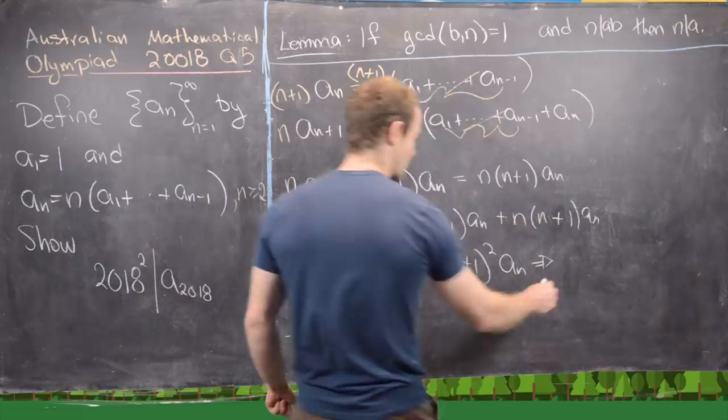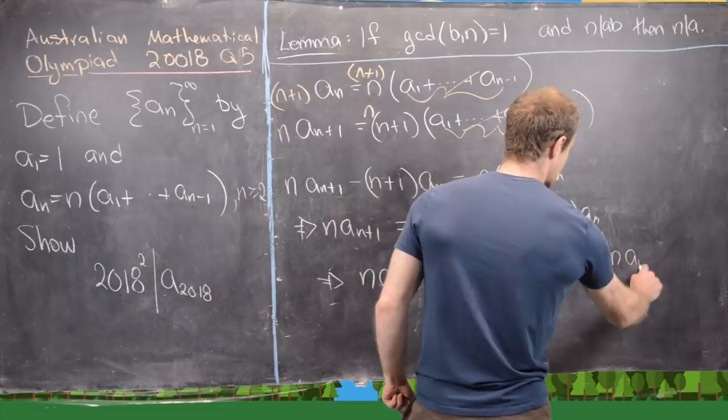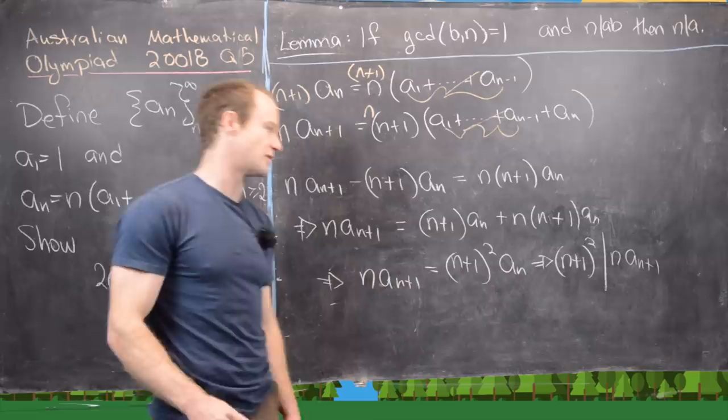This equation tells us that n plus 1 quantity squared divides n times a sub n plus 1. Because we've written this entire left hand side as a multiple of n plus 1 quantity squared.